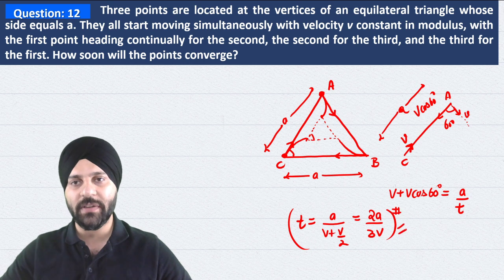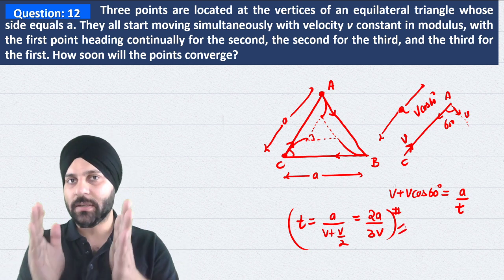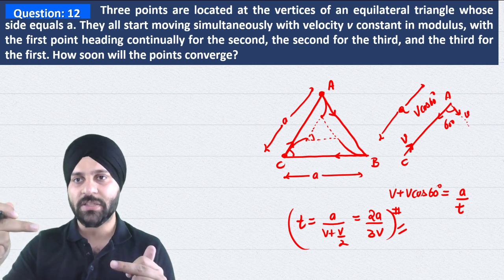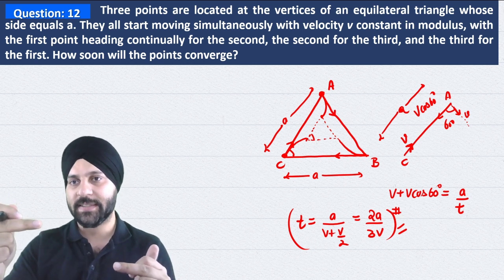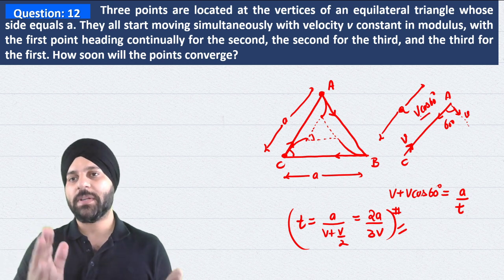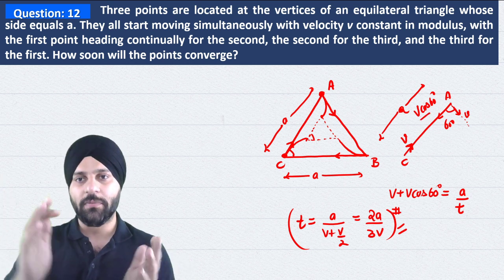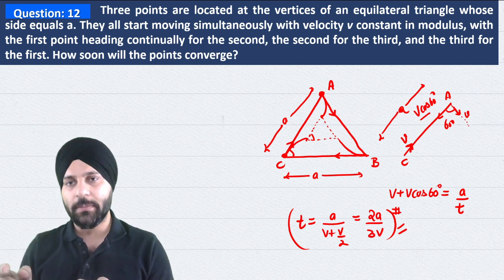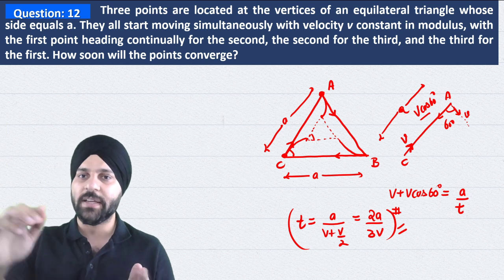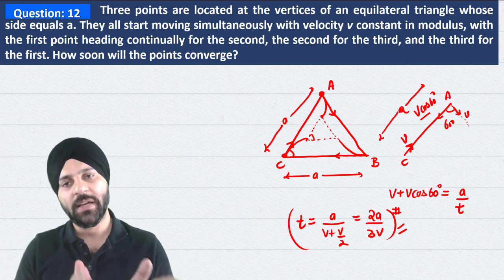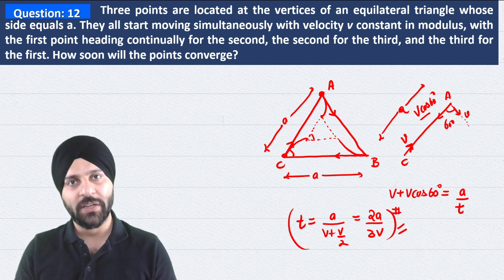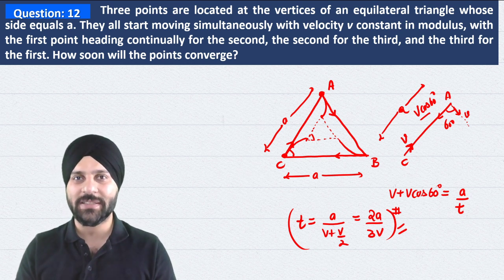So the answer is 2a divided by 3v. The question was very simple - we just needed to find the relative velocity toward each other. And because the motion is symmetric, their angle will always remain 60 degrees, so this relative velocity v plus v cos 60 degree toward each other will also remain constant. You could do the same calculation along BC or AB as well. The correct answer is 2a by 3v. Question number 13 students is the next question.